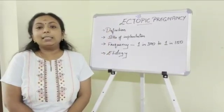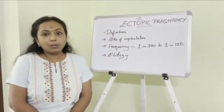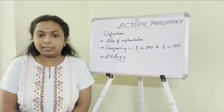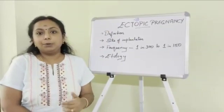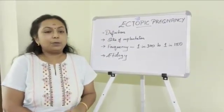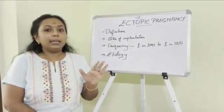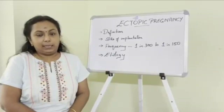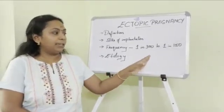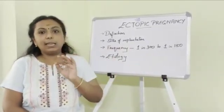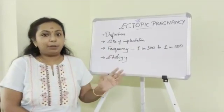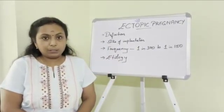Before moving on to the definition of ectopic pregnancy, we need to know what happens in a normal pregnancy. In a normal pregnancy, the ovum gets fertilized in the ampullary part of the fallopian tube.